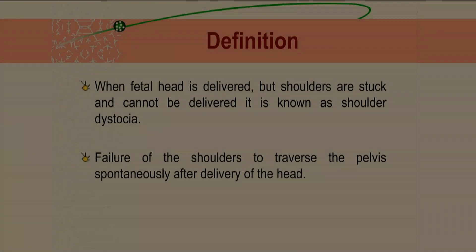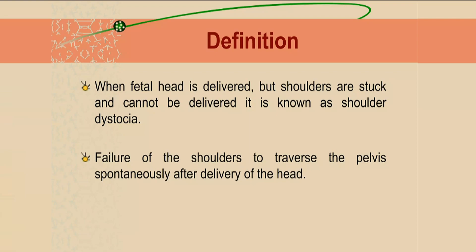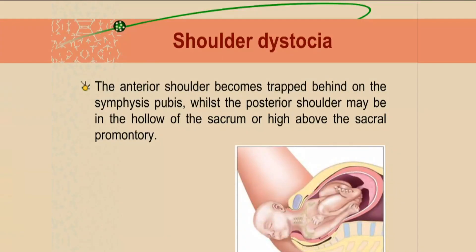Shoulder dystocia is when the fetal head is delivered but the shoulders are stuck and cannot be delivered. It is defined as the failure of the shoulders to traverse the pelvis spontaneously after delivery of the head. In shoulder dystocia, the anterior shoulder becomes trapped behind the symphysis pubis, while the posterior shoulder may be in the hollow of the sacrum.